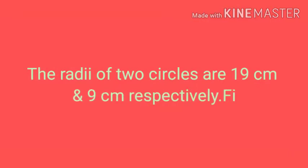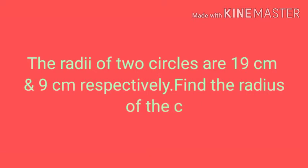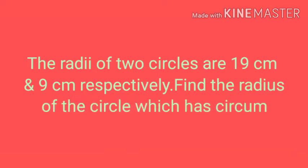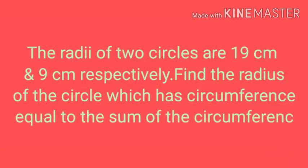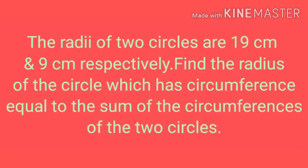The radii of two circles are 19 cm and 9 cm respectively. Find the radius of the circle which has circumference equal to the sum of the circumferences of the two circles. Here, two circles are there with radii 19 cm and 9 cm. We have to find the circumference of both circles first.